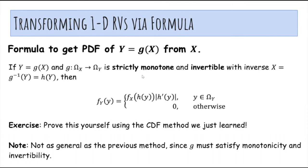In general, there's an explicit formula for this. If Y = g(X) and g is a strictly monotone and invertible function with inverse g⁻¹(y) = h(y), then using the CDF method you can show that the pdf of Y equals the pdf of X evaluated at h(y), times the absolute value of the derivative of h with respect to y: f_Y(y) = f_X(h(y)) · |h'(y)|.